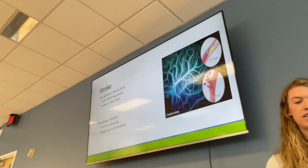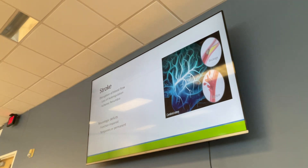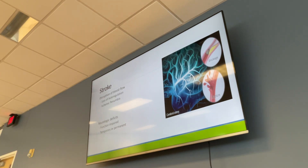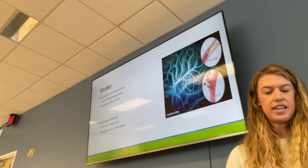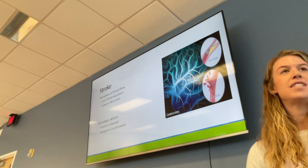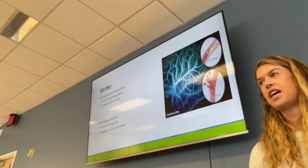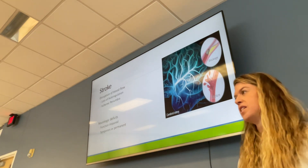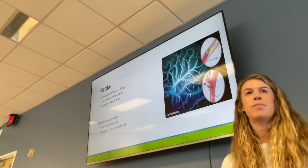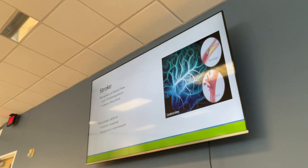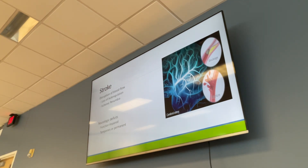We need a continuous supply of blood and oxygen to the brain to function. Usually if metabolism is altered within 30 seconds it can stop, within two minutes cellular death begins, and within five minutes we have complete cellular death. Just like with MIs, the amount of time the blockage is present — time is tissue, or time is death.